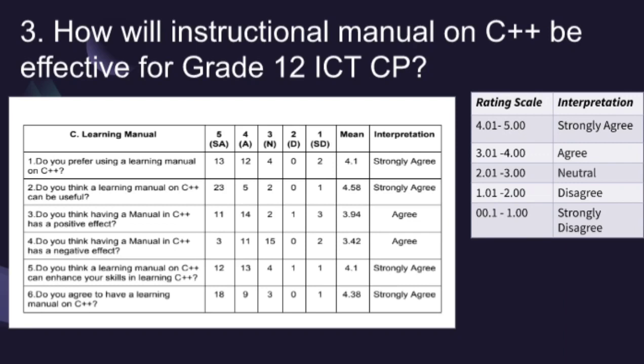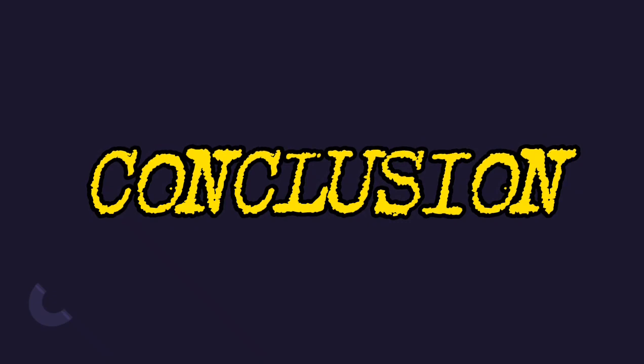After getting the interpretation of all questions, we conclude that the Learning Manual is a must, for the reason that 4 out of 6 questions received a strongly agree interpretation and the other two are agree. The purpose of this study is to quantitatively analyze how helpful a manual on C++ could be for computer programming students in senior high. The researchers conclude that when a computer programming student has a manual about C++, their grades would be better in programming, and the manual would be useful and effective in increasing grades.